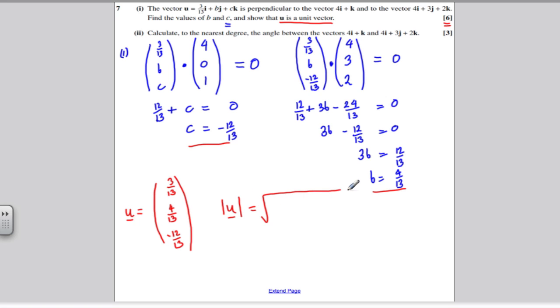What's the square root of that squared? So 3/13 squared plus 4/13 squared, plus minus 12/13 squared.